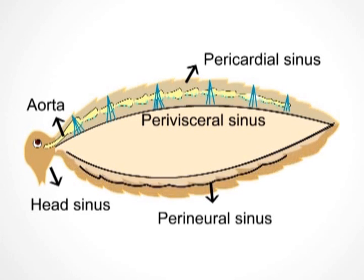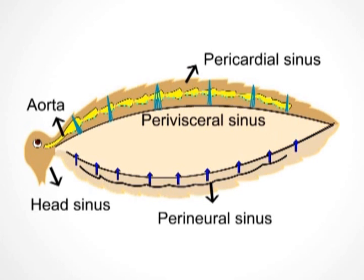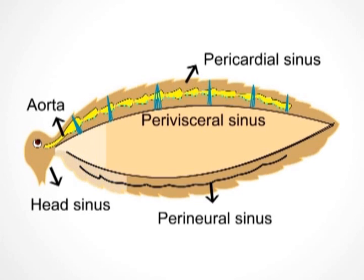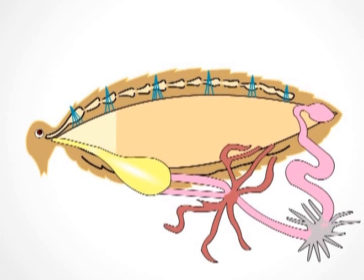From the first chamber of the heart, blood moves through the aorta into the head sinus. From the head sinus, blood flows into the body cavity — that is, into the perivisceral and perineural sinuses. From here it goes into the pericardial sinus and the cycle is repeated.